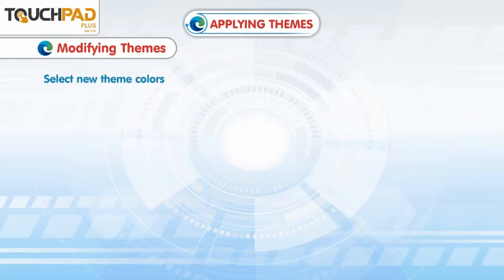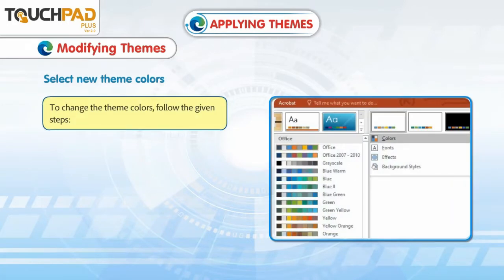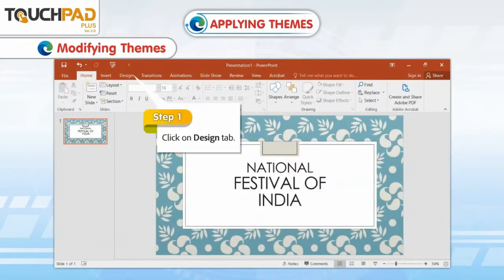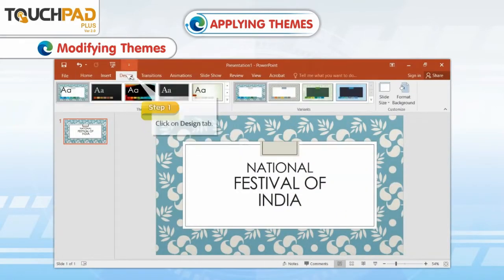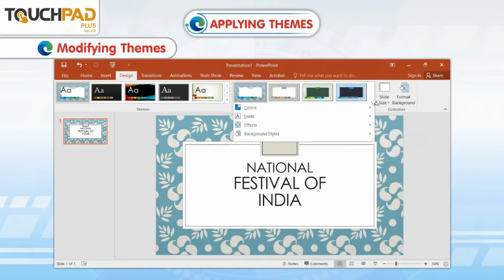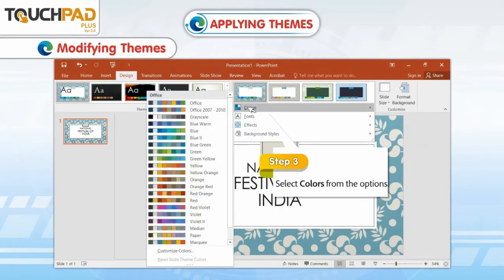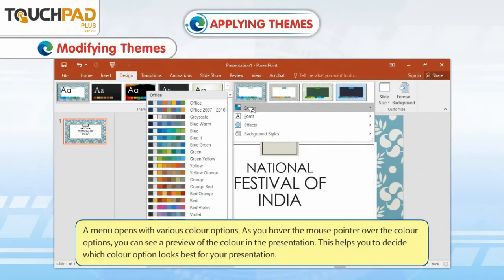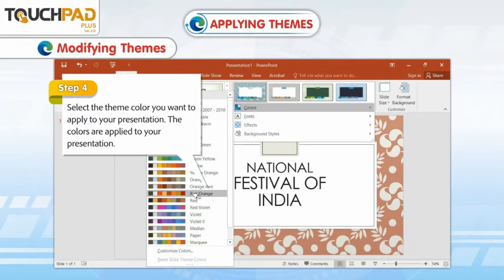Select New Theme Colors. To change the theme colors, follow the given steps. Step 1: Click on the Design tab. Step 2: Click on the More drop-down arrow in the Variants group. Step 3: Select Colors from the options. A menu opens with various color options. As you hover the mouse pointer over the color options, you can see a preview of the color in the presentation. This helps you decide which color option looks best for your presentation.